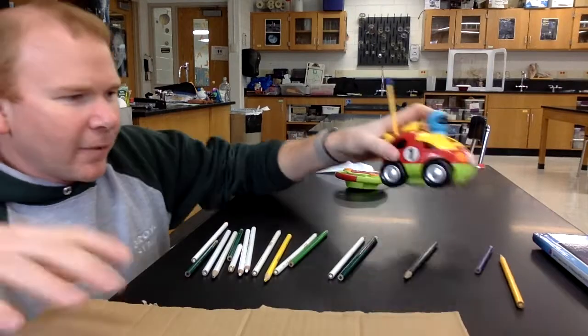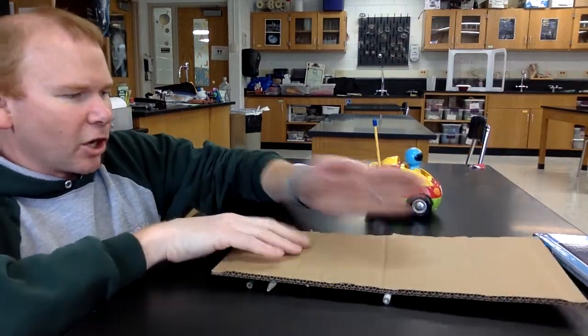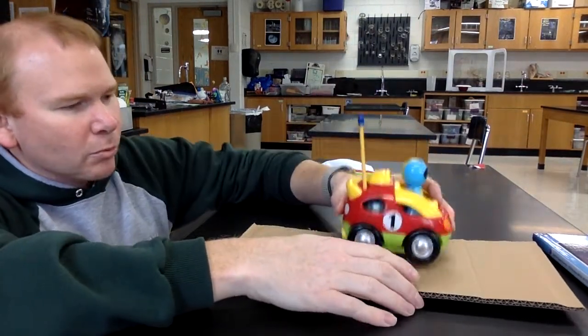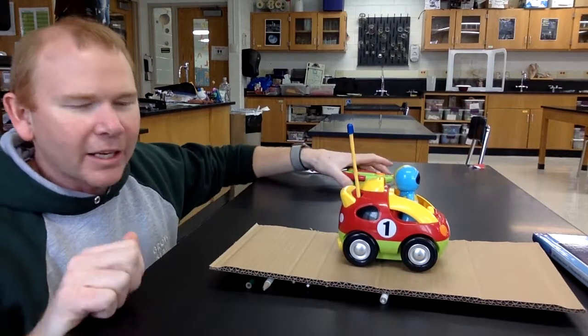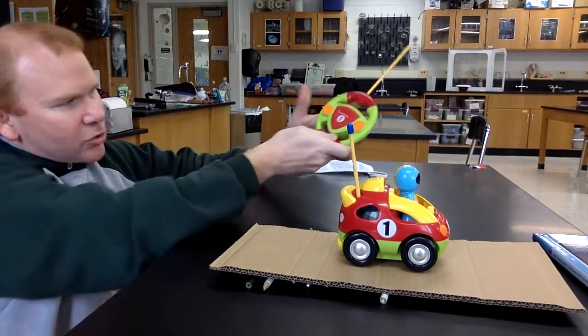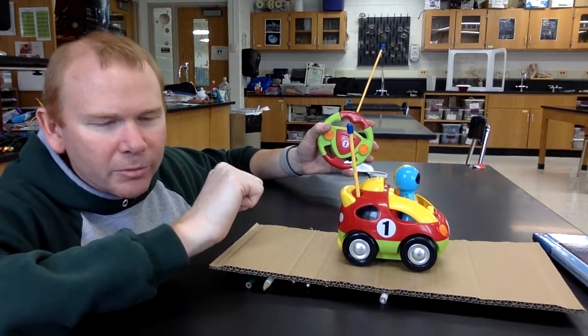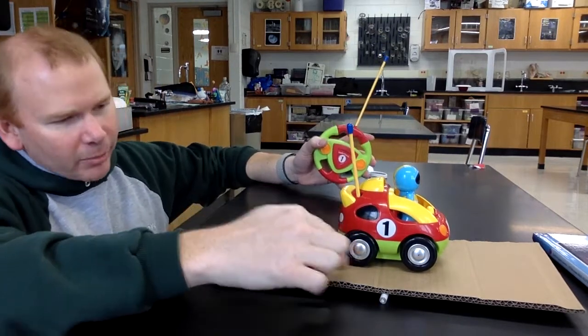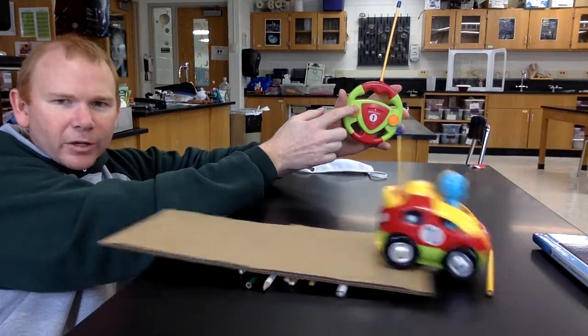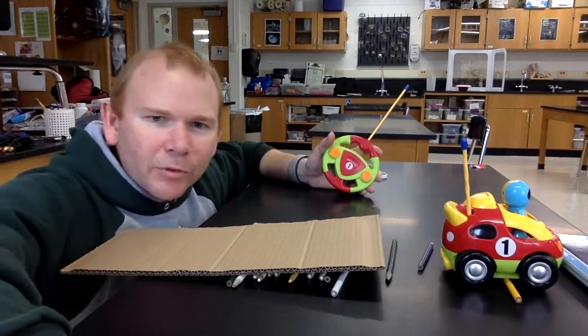So you could see that the car's tires are pushing it and it's able to move the cardboard backwards equal and opposite. Just like Newton's third law. When the tires are pushing on the cardboard, the cardboard is pushing back with an equal force. The cardboard is going to slide back because of that force. And that is an example of Newton's third law.